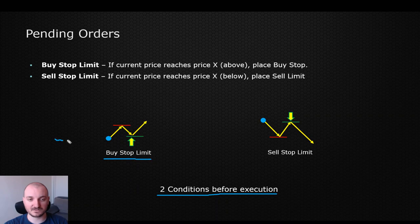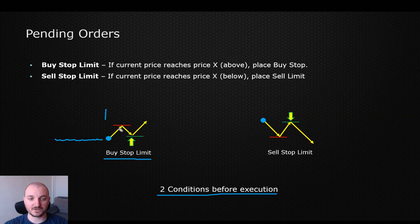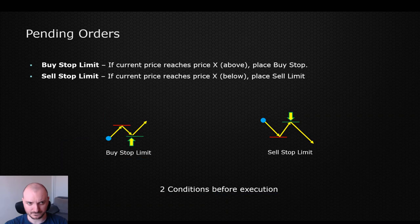We need to see two things happening before the order is actually executed. When it comes to buy stop limit, for example, imagine this is the current price right here. What we are telling the platform to do is, first of all, wait for the price to go and reach that level — condition number one — then let the price move lower a bit, reach that zone, and only here execute the buy trade. On the other hand, we have the sell stop limit, which does a very similar thing just in the opposite direction.